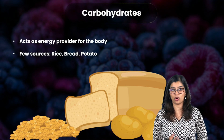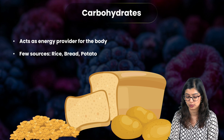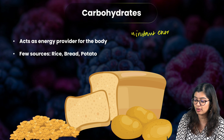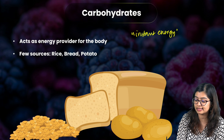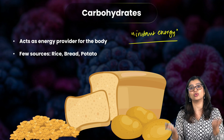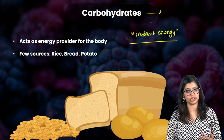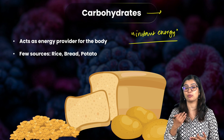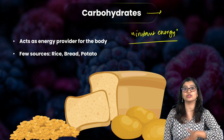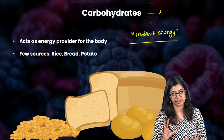First up we have carbohydrates, which are nutrients that give us instant energy. As soon as we consume carbohydrates they are utilized immediately by the body. Rice, wheat, potato, and bread are all sources from which we get instant energy, as the body utilizes carbohydrates very efficiently.